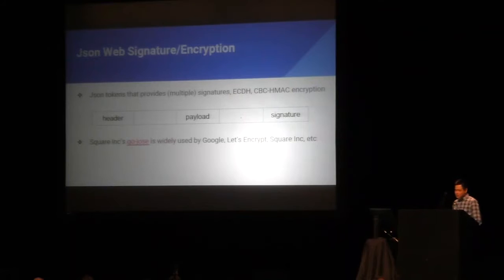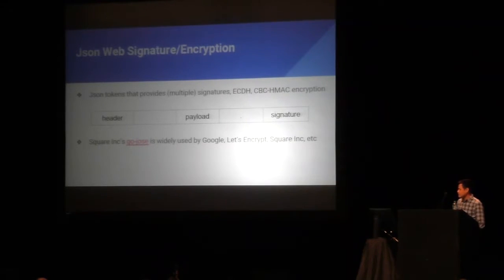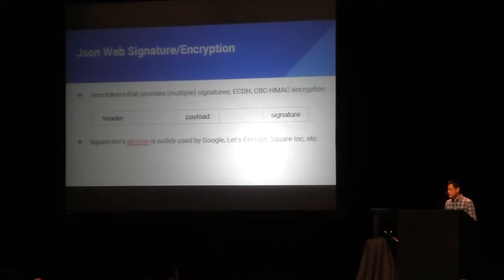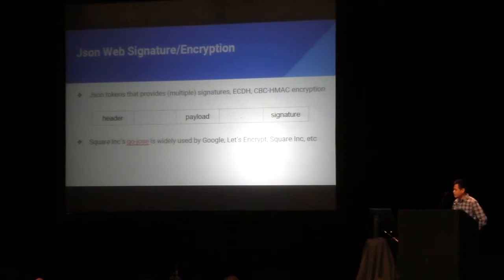JSON Web Token is basically just a JSON token, but it provides signatures or maybe multiple signatures. It has ECDH, CVC, HMAC, and encryption. It has different formats. The format I will focus on today is very simple — it has a header, a payload, and signatures. In particular, I will talk about the Square GoJose implementation, which is widely used by Google, Let's Encrypt, and Square Inc.